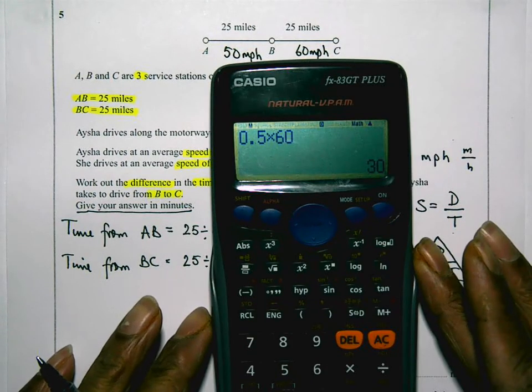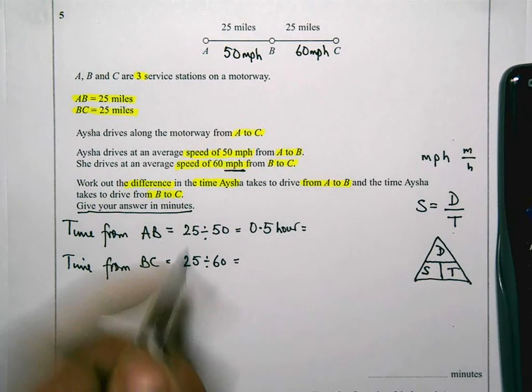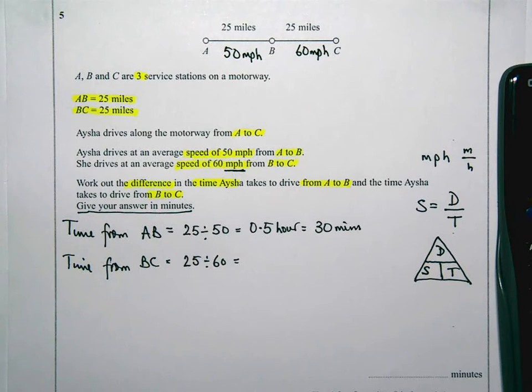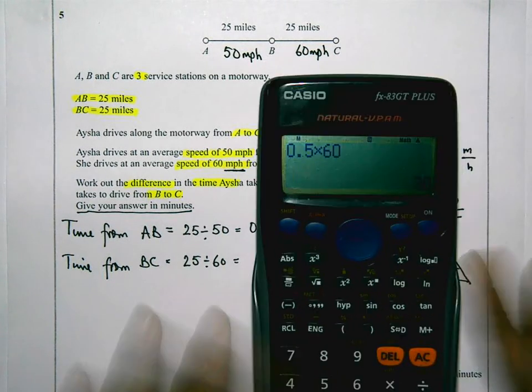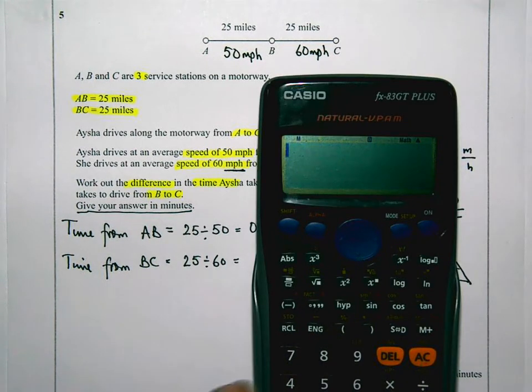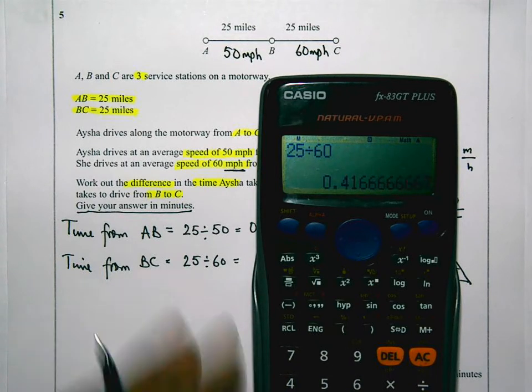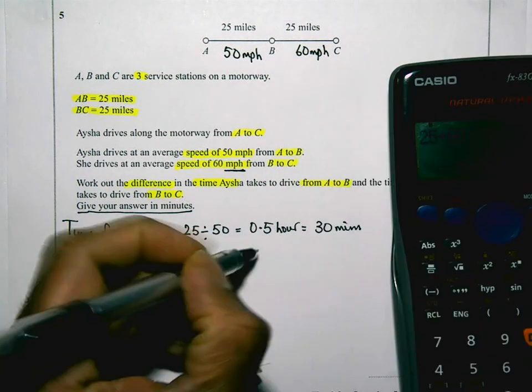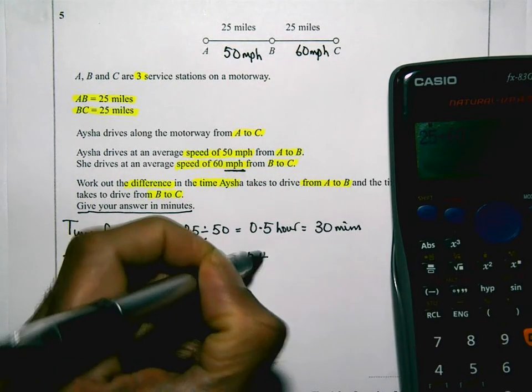So that's 30 minutes. I'm going to work out the amount of time now from B to C. So B to C, that's 25 divided by 60. And that's equal to 0.41666 recurring hours.